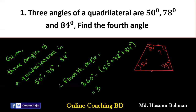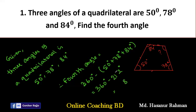Adding 50 + 78 + 84: 8 + 4 = 12, carry 1; 1 + 6 + 5 = 22, so we get 212 degrees. Then 360 − 212: 10 − 2 = 8, 6 − 2 = 4... wait, that gives 148 degrees. So 148 degrees is the final answer.